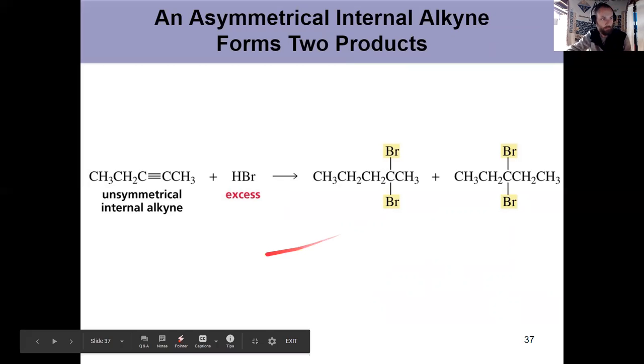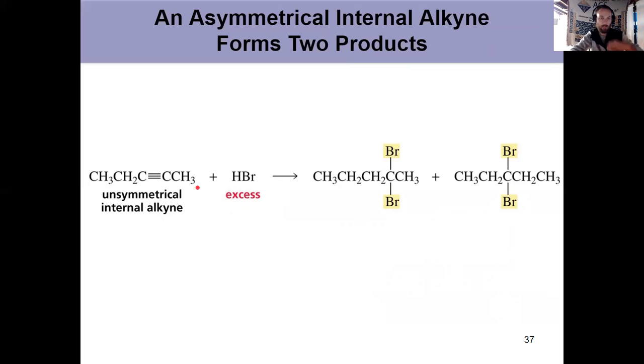So if I have an alkyne and I have excess HBr, it's going to add HBr twice. And because it's internal, it's not going to be regioselective. So that means I can add an H and a Br here to start, which controls the second reaction. You always form a geminal dibromide, but both bromines can go here or both bromines could go here. So you get two different products in these geminal dihalides, one where they're on carbon two and another one where they're on carbon three.